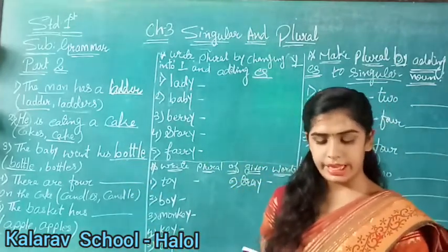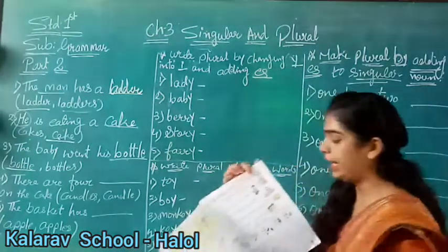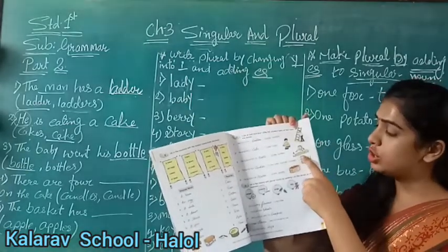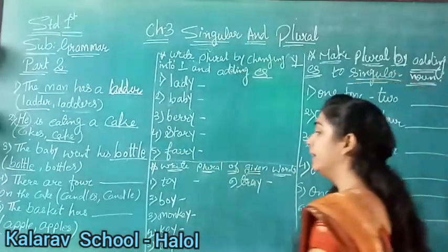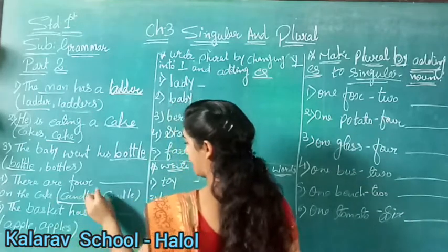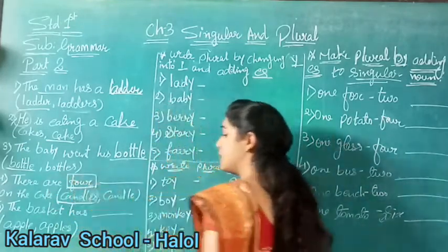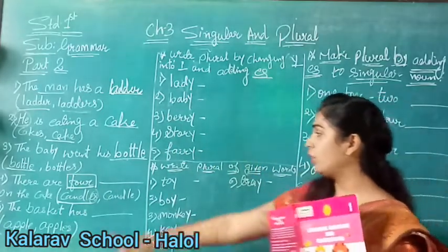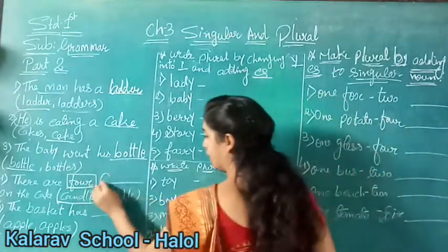Now see number four: 'There are four blanks on the cake.' Here we have shown one cake. How many candles? Count - one, two, three, and four candles are there. So what will you write - candle or candles? Here we will write candles. Why do we put S here? Because there are four candles - it is not singular. Singular means when we talk about only one thing, but here we are talking about more than one thing.